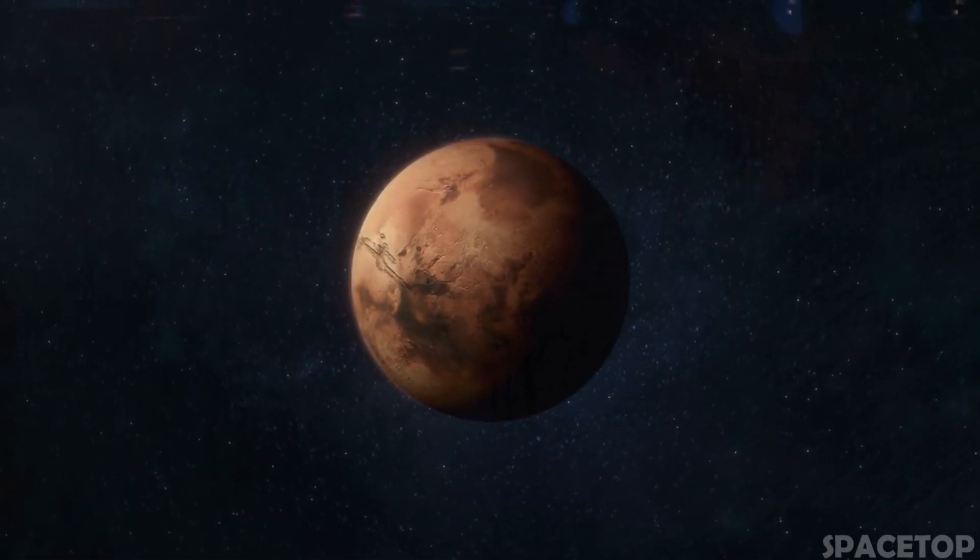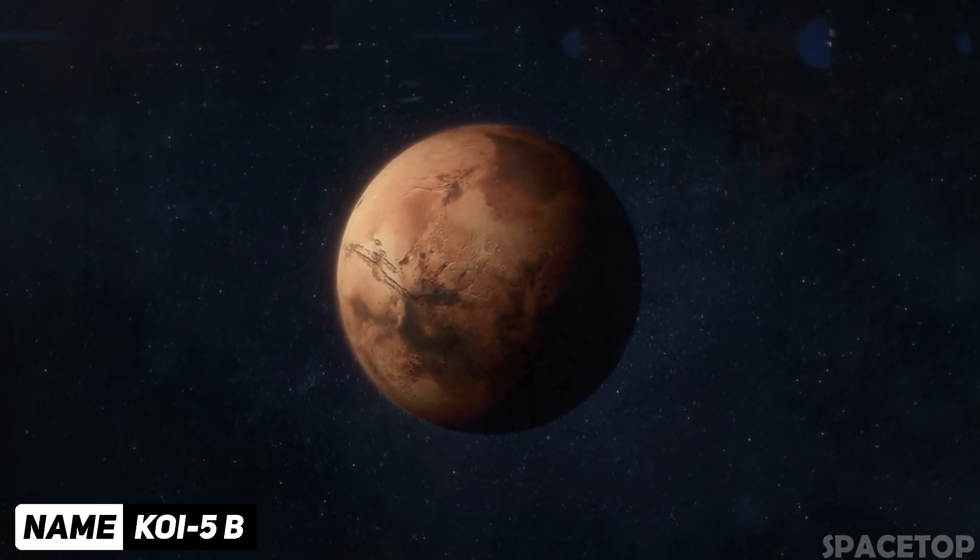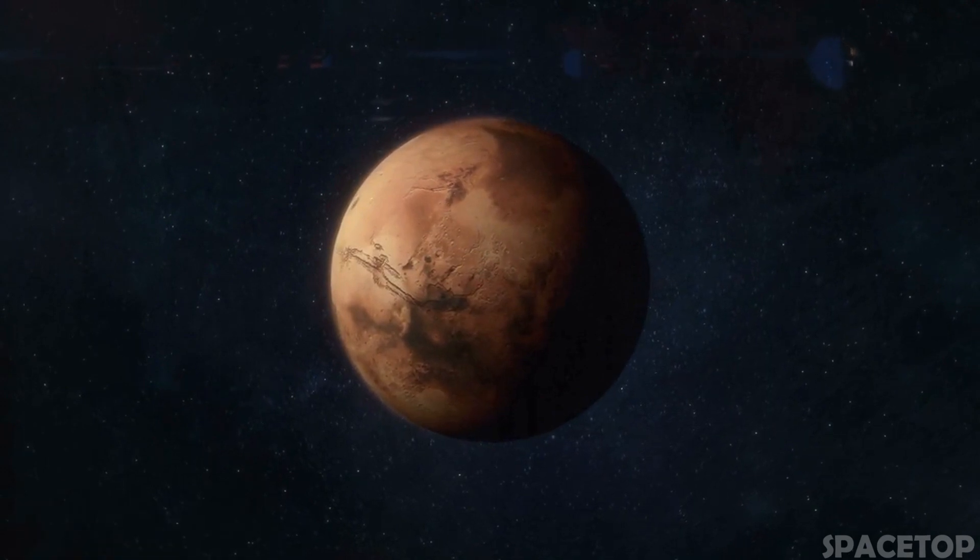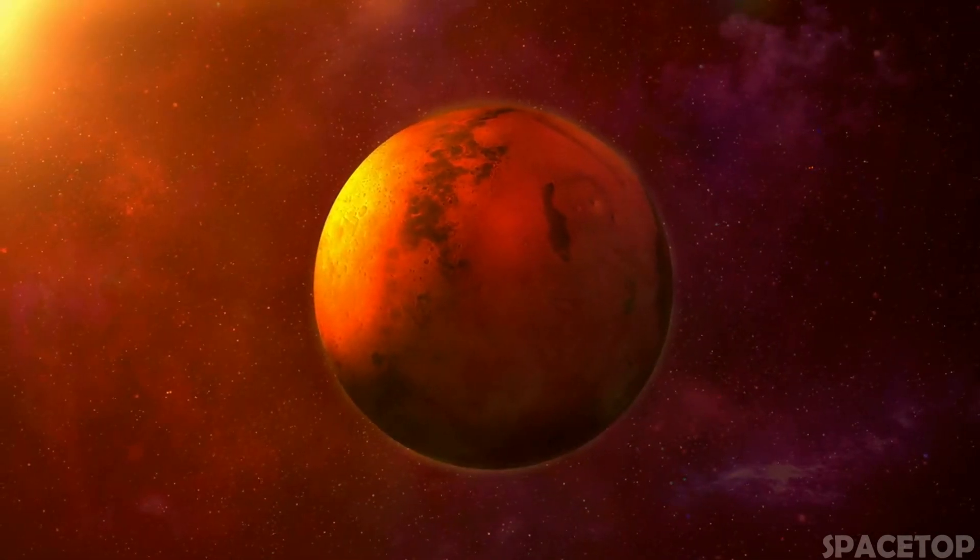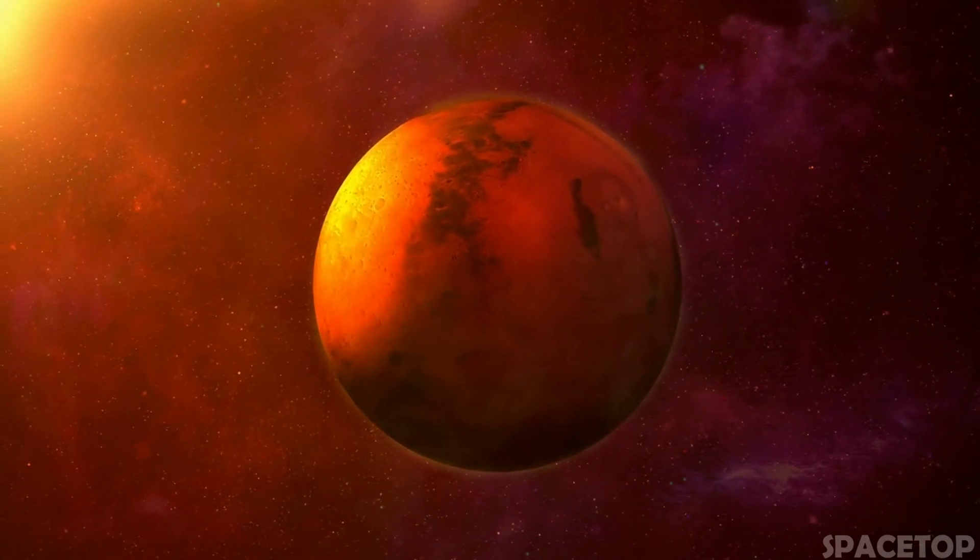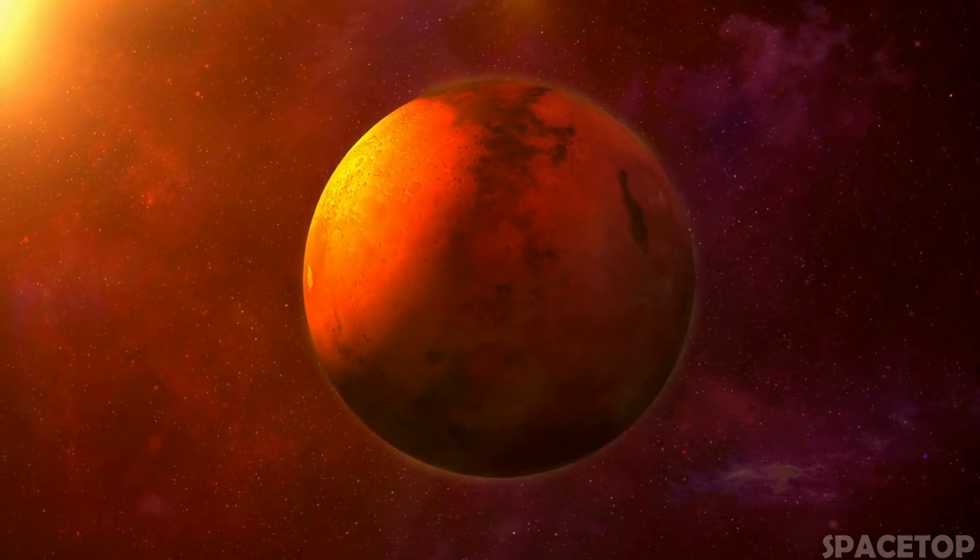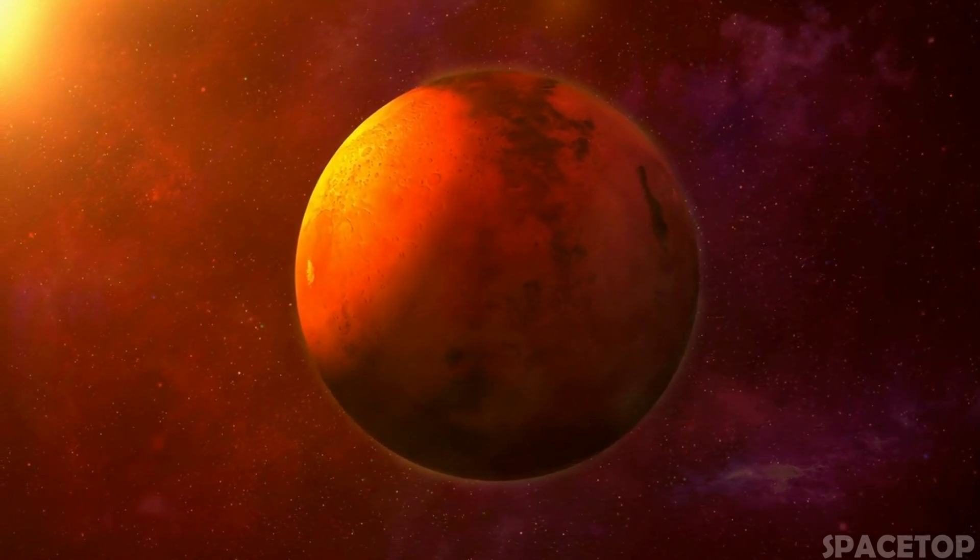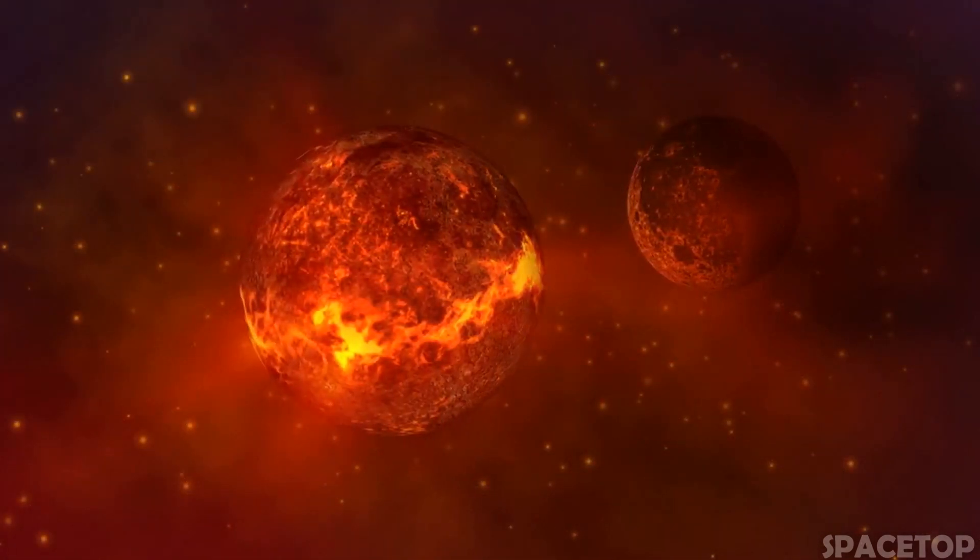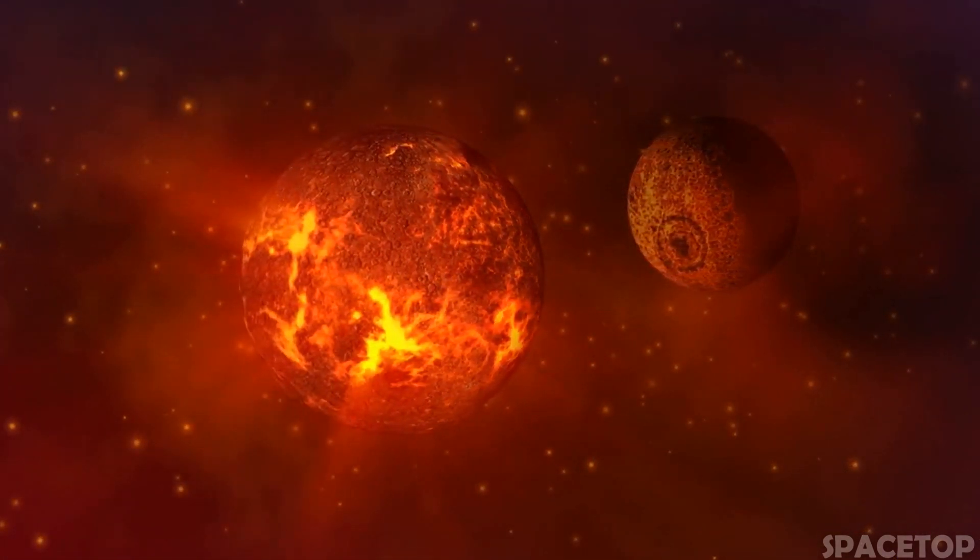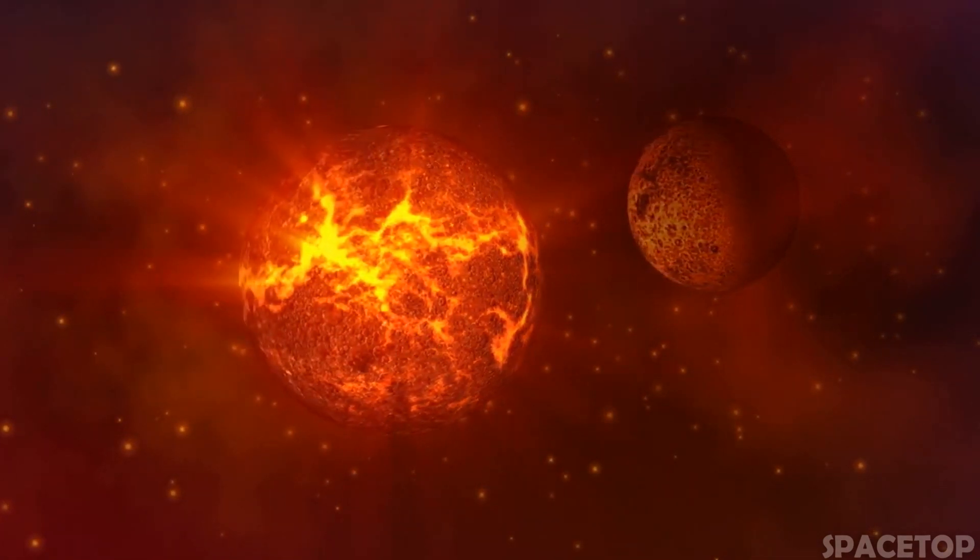The last exoplanet on our list is Koi-5b and the uniqueness of this space object lies not in its advantages, but in the system of which it is a member. The planet, about half the size of Saturn, was initially ignored because of its complexity and was even considered science fiction. Ten years later, the system, dubbed Koi-5, was given the scientific attention it deserved. It turned out that astronomers had stumbled upon a system of three stars.